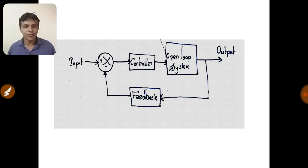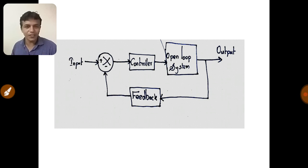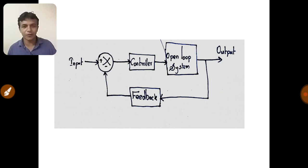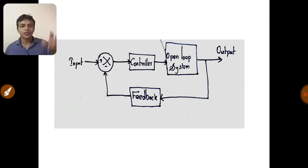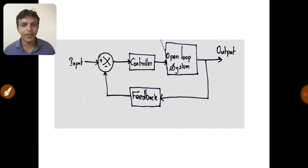As a result, a lot of electricity is saved. In the open loop system, whether the refrigerator is chill or not, the compressor runs in its set period and does not run in the other period, according to the program. Analyzing these things, we conclude that closed loop system is more advantageous than open loop system.